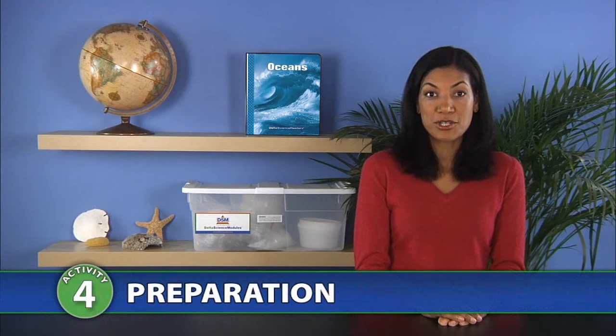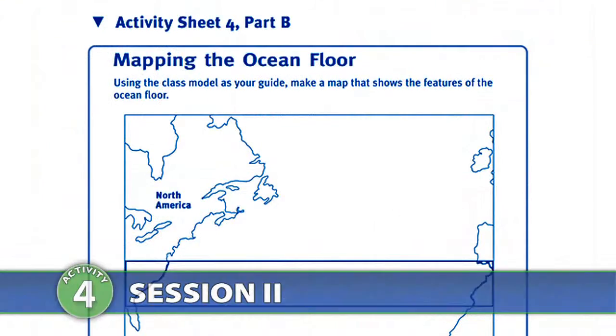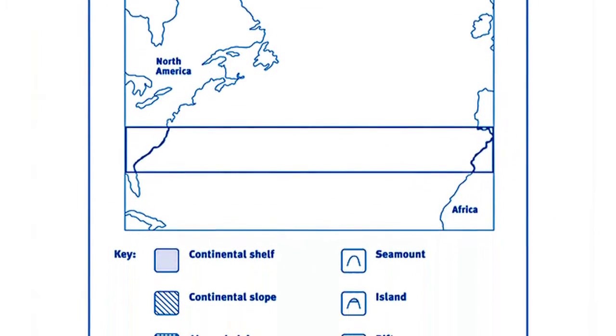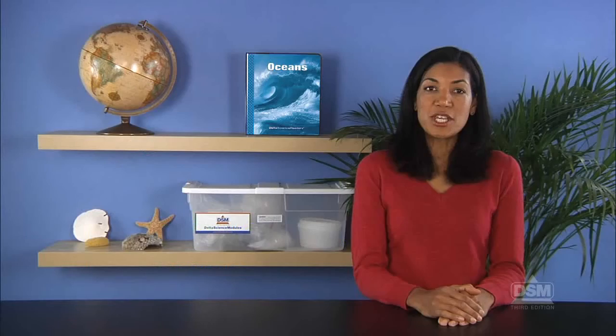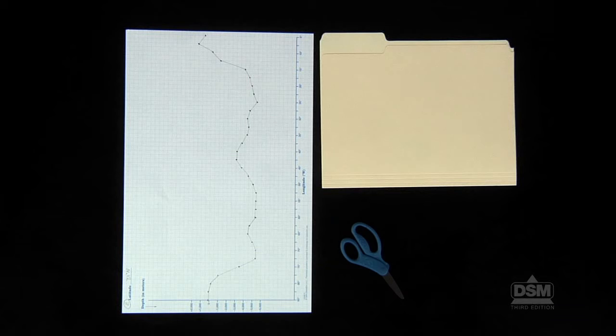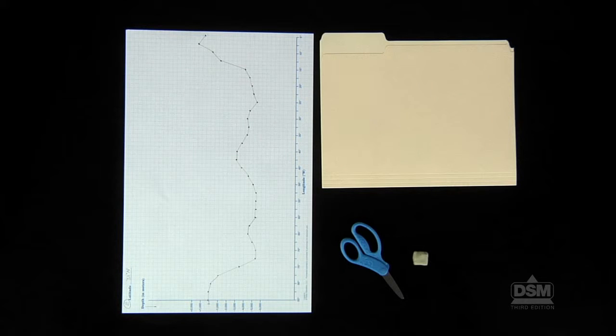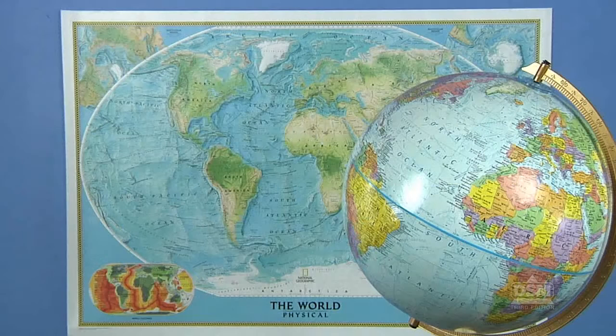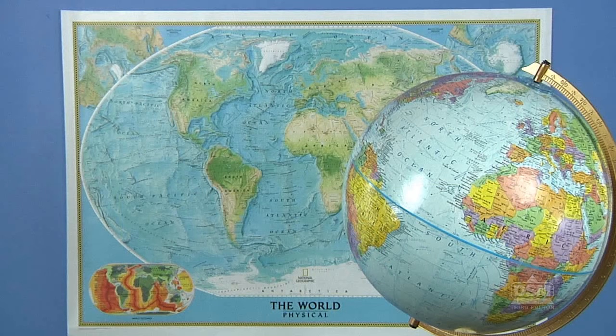To prepare for Session 2, make a copy of Activity Sheet 4 Part B for each student. Each team of four will need their depth profile from Session 1, one manila folder, one pair of scissors, a small chunk of modeling clay, and some glue. Post the world map that shows the landforms both above and below sea level for all students to see.